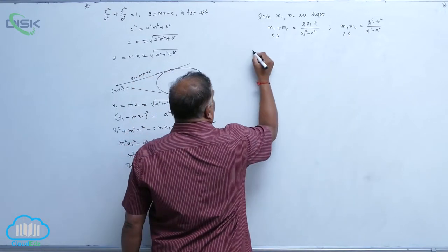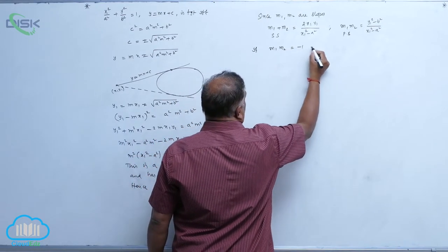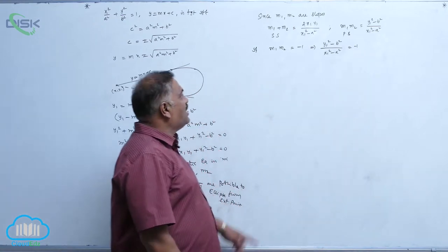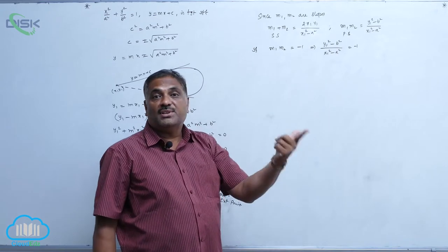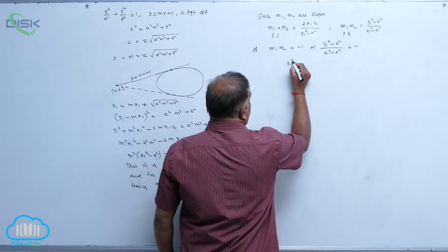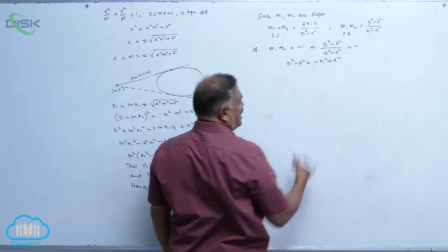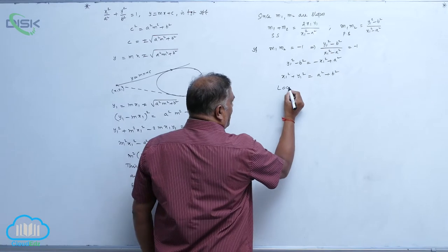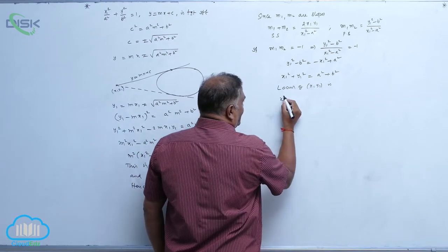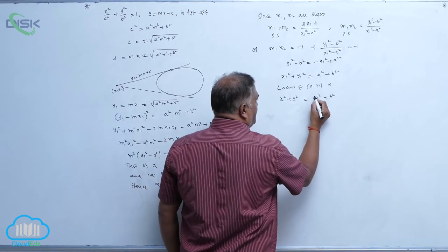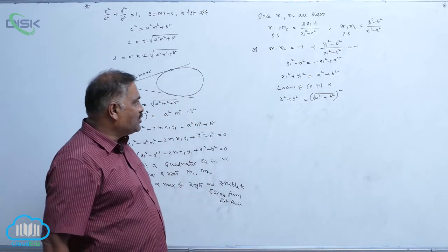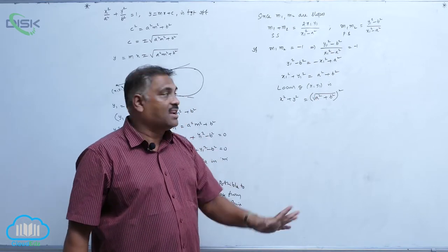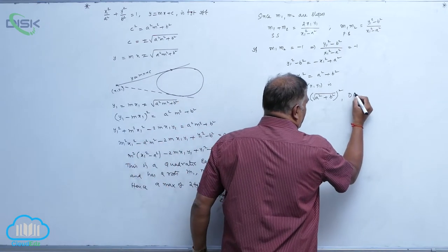In particular, if m₁·m₂ = -1, then (y₁² - b²) / (x₁² - a²) = -1. When the product of slopes equals -1, the angle between them is 90°. So y₁² - b² = -x₁² + a², giving x₁² + y₁² = a² + b², which is x² + y² = r², a circle — called the director circle.